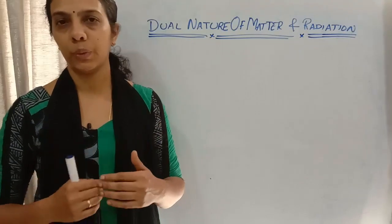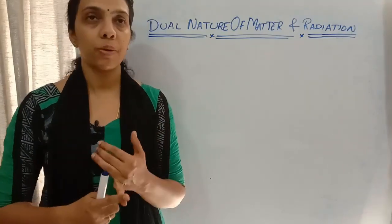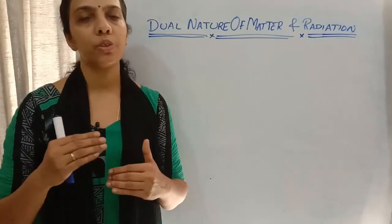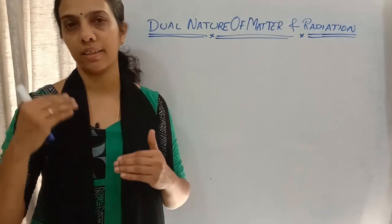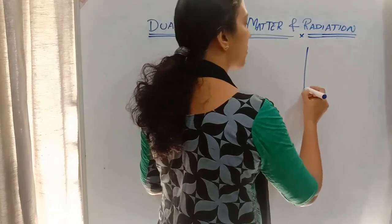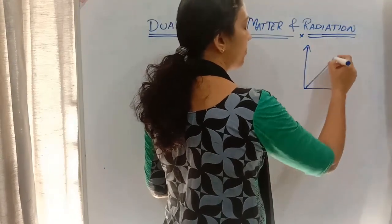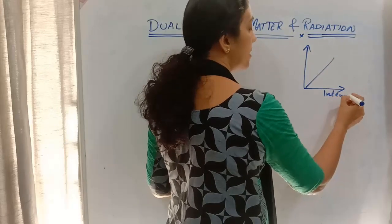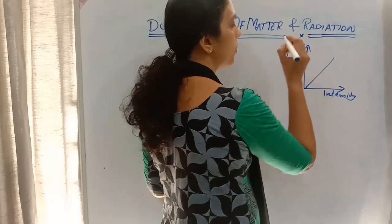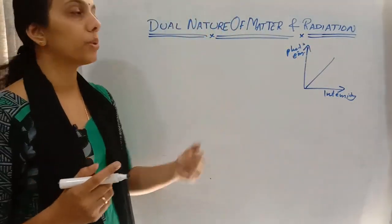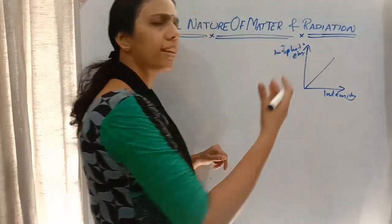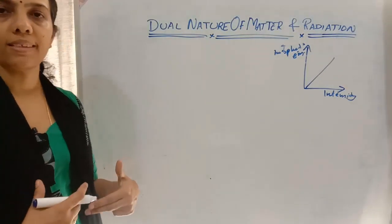In the experimental study, we discussed about the variation of intensity and the number of photoelectrons emitted, or photo current. The intensity of radiation and the number of photoelectrons emitted are directly proportional. As the intensity increases, the number of photoelectrons increases.